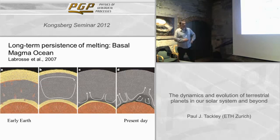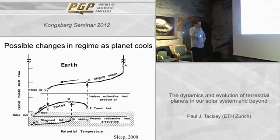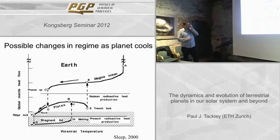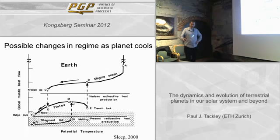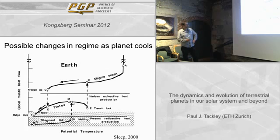As the planet goes through long-term evolution, it may change its tectonic regime. Today Earth has plate tectonics, but other planets don't — and this could have been different in the past. Earth may not have always had plate tectonics, or other planets may have had plate tectonics and stopped. There is a possible regime diagram proposed by Norm Sleep in 2000, showing how — for Earth — the heat flow and potential temperature of the mantle relate to tectonic mode.